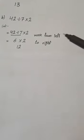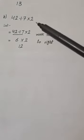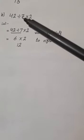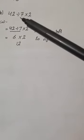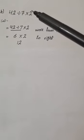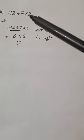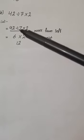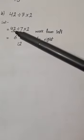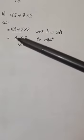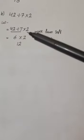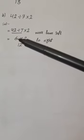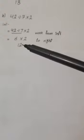In the next question, we also have two operations that belong to one family — divide and multiply — which are both in the second family. So we work from left to right. Starting from the left: 42 divided by 7 equals 6, then 6 multiplied by 2 equals 12.